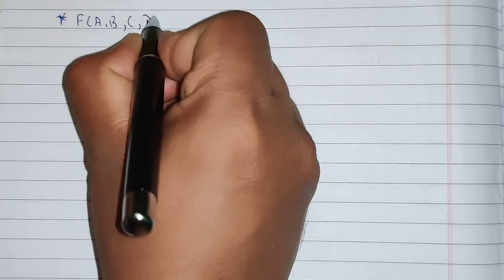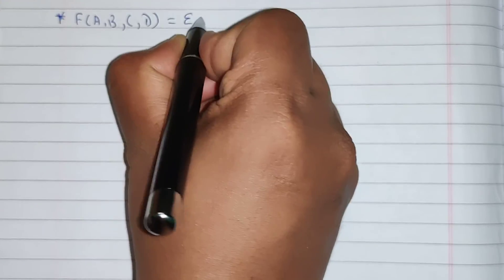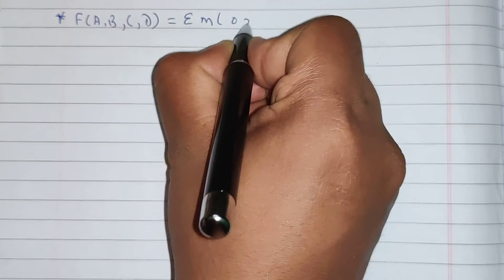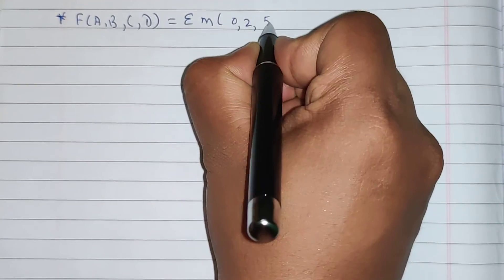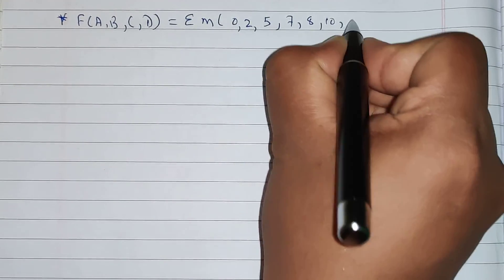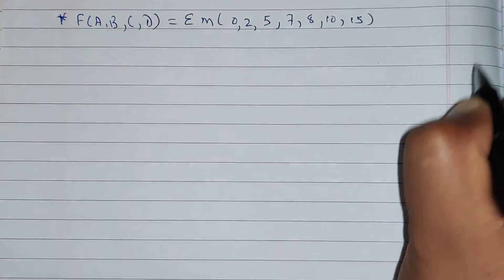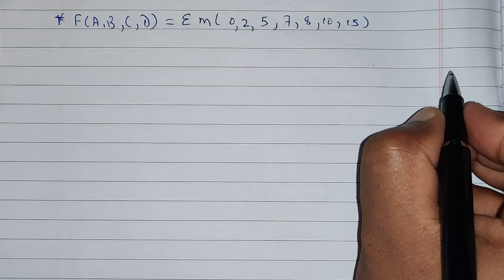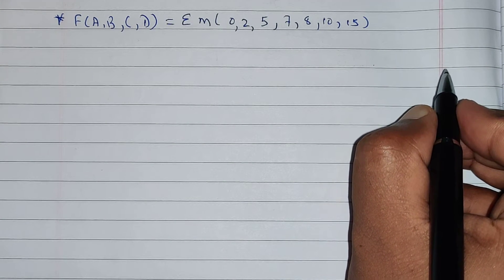Hello everyone. Today we are going to solve a 4-variable K-map problem. The problem is: function of a, b, c, d is equal to summation of minterms 0, 2, 5, 7, 8, 10, 15. We need to solve this using a 4-variable K-map.